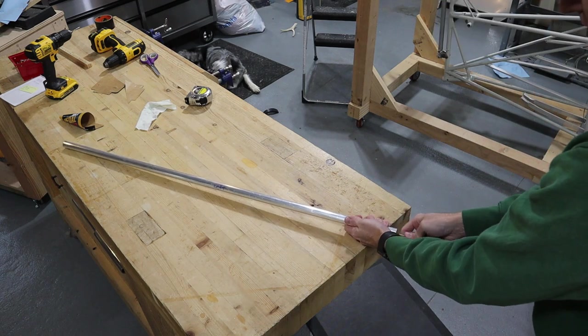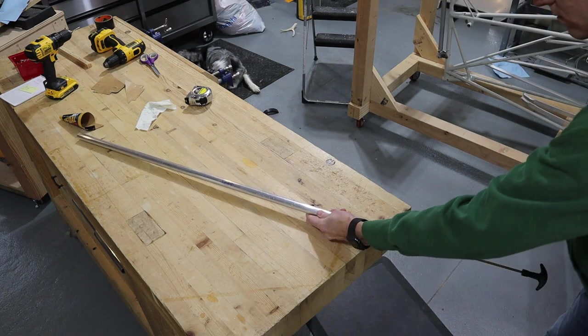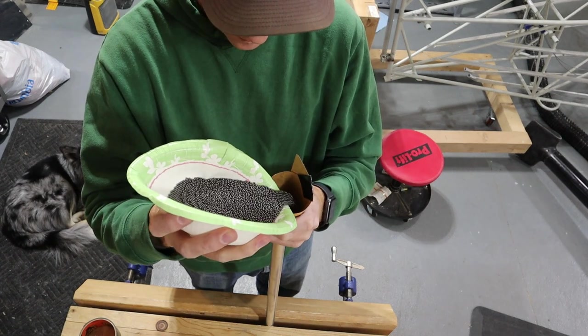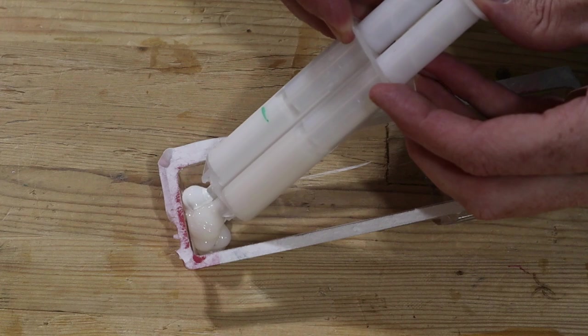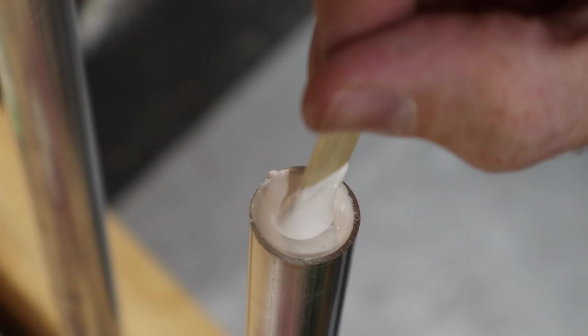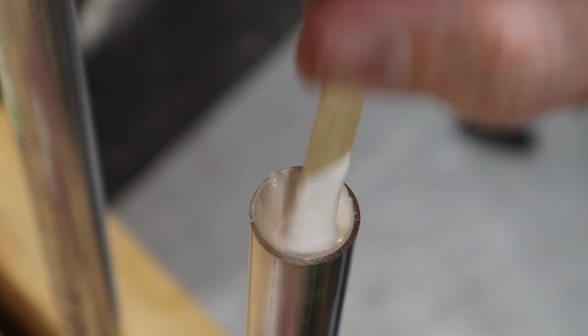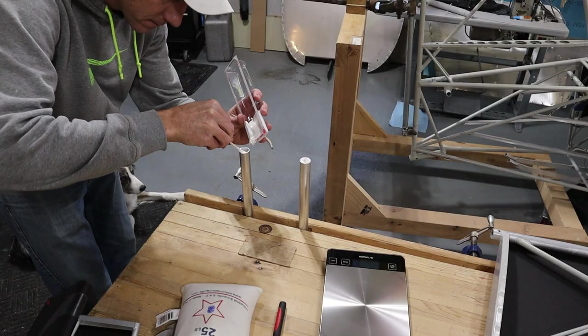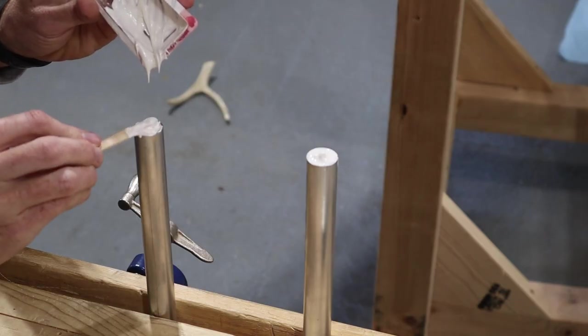I first plugged one end of the tube and poured most of the shot in. Then I mixed up some epoxy and put it in one end, trying to work it down into the shot a little ways. After that end had cured, I poured in the remaining shot needed to hit my target weight and epoxied that end.